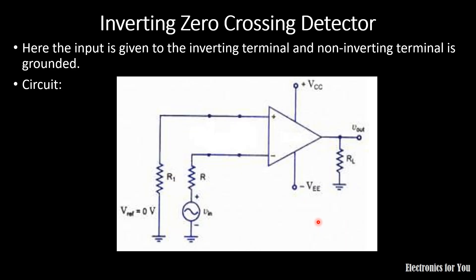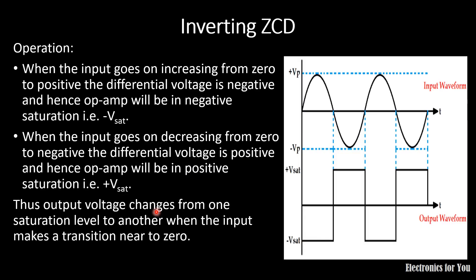The second type is the inverting zero crossing detector. Here, the input is given to the inverting terminal, that is why it is called inverting ZCD, and the non-inverting terminal is grounded. The formula is again applicable: VID equals voltage at the non-inverting terminal minus voltage at the inverting terminal, which gives zero minus VIN, equals negative VIN.